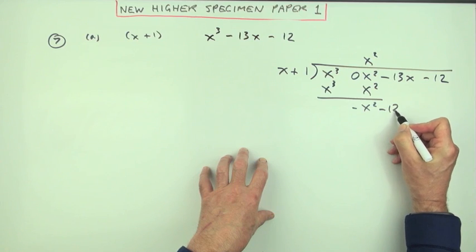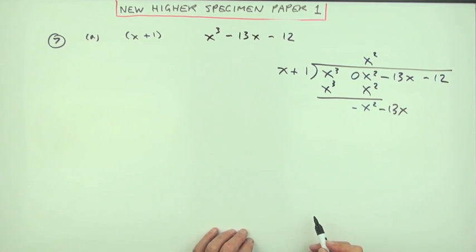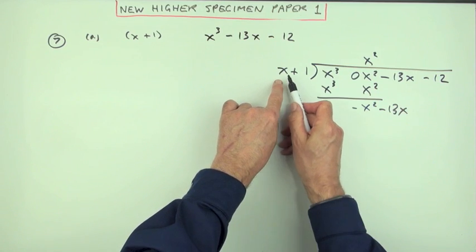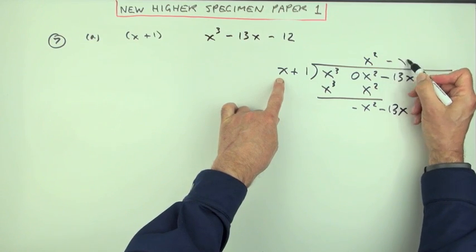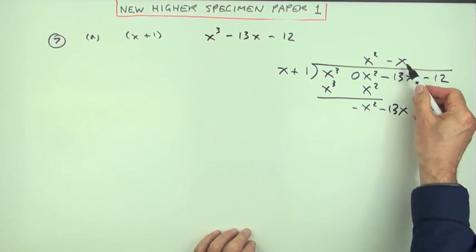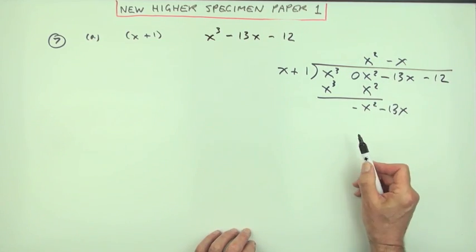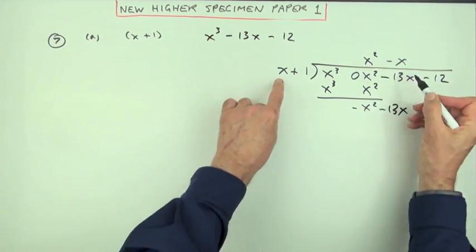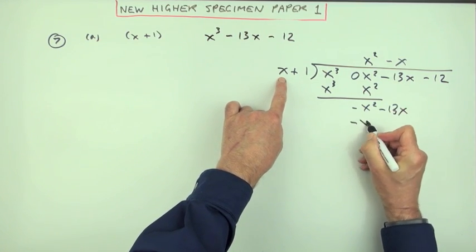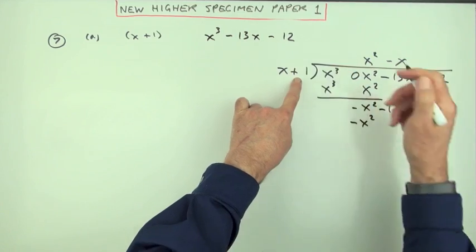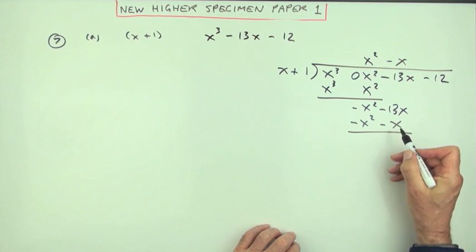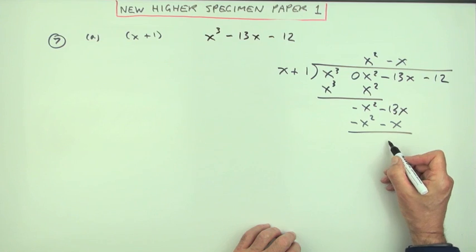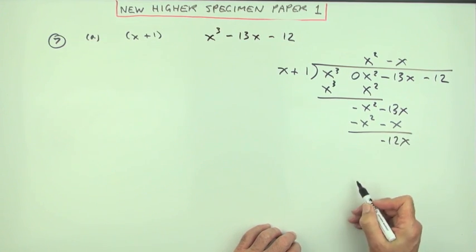Then carry it on to the next column. Or rather, bring that column down to it. And then we start again. What would I multiply this by to get a negative x squared? And multiply it by a negative x. So a negative x goes in the x column. It's just like units, tens, hundreds, thousands. Multiply it out. Negative x squared minus x. Subtract it to find the remainder. Negative 13 plus 1 would be negative 12x.